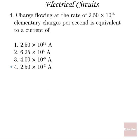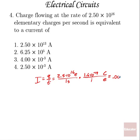Problem 4: Charge flowing at the rate of 2.5 times 10 to the 16 elementary charges per second is equal to a current of? Well, let's first change those elementary charges into coulombs. So we could say that current is charge over time, so that's going to be 2.5 times 10 to the 16 elementary charges, divided by 1 second, times, we want elementary charges to go away, we want coulombs. And one elementary charge is 1.6 times 10 to the minus 19 coulombs. So when I multiply that out, I'm going to come up with about 0.004 amps, or 4 times 10 to the minus 3 amps, which is answer number 3.